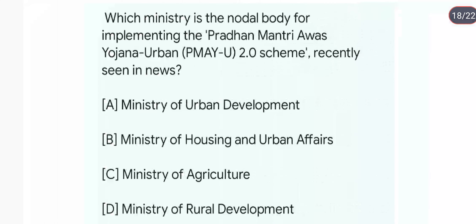Which ministry is the nodal body for implementing the Pradhan Mantri Awas Yojana 2.0 scheme recently in the news? The scheme's period has been extended by 5 years, and the ministry involved is the Ministry of Housing and Urban Affairs. Answer is B.